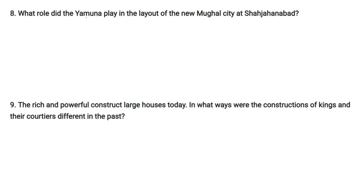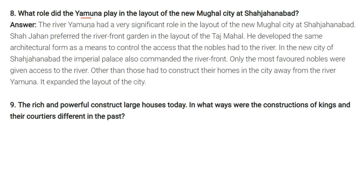Question: What role did the Yamuna play in the layout of the new Mughal city at Shah Jahanabad? Shah Jahan preferred the riverfront garden in the layout of the Taj Mahal and developed the same architectural form as a means to control the access that nobles had to the river. In the new city of Shah Jahanabad, the imperial palace commanded the riverfront. Only the most favoured nobles were given access to the river; others had to construct their homes in the city away from the river Yamuna.